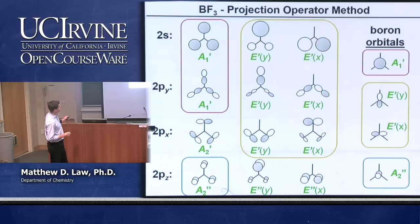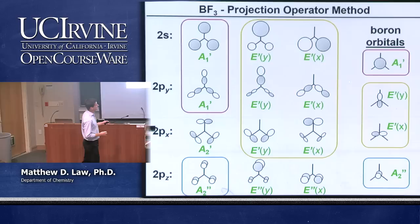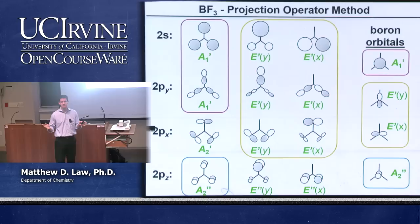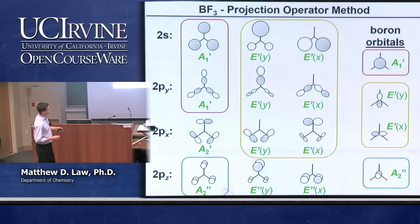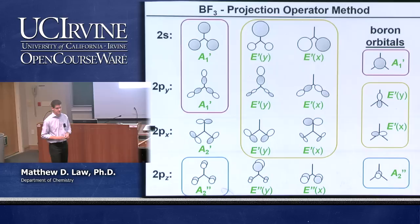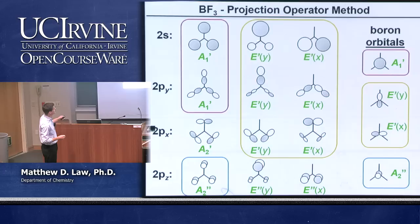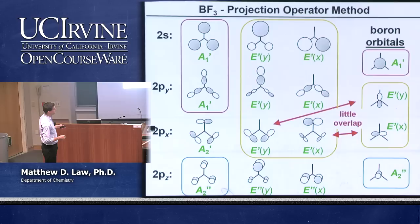We were basically here last time, where we constructed the group orbitals from the three outer fluorines. We have 12 total orbitals there, and four orbitals from the boron. We had assigned all of the irreducible representations and indicated which are expected to have interactions based on symmetry. We expect interactions between the A1 primes, the E primes, and the A2 primes. Three of the group orbitals have no symmetry-matching partner on the center atom, so those will be non-bonding. The fluorine 2s orbitals are not going to interact with the central boron, so those three orbitals will be primarily non-bonding.